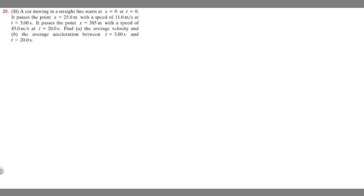In this problem we're told a car moving in a straight line starts at x equals 0 at t equals 0. It passes the point x equals 25 meters with a speed of 11.0 meters per second at t equals 3 seconds. And then it passes the point x equals 385 meters with a speed of 45 meters per second at t equals 20 seconds.